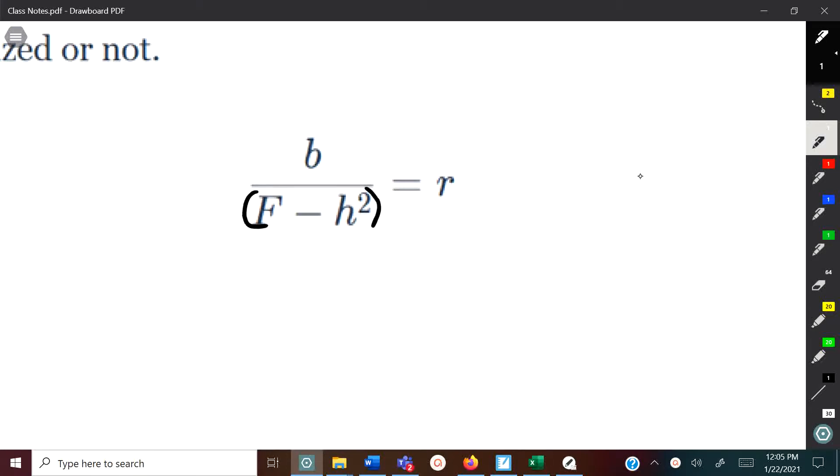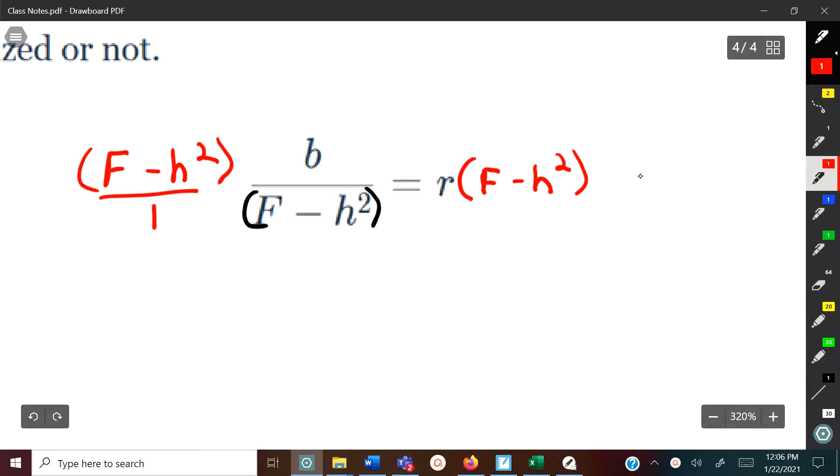The opposite of division is multiplication, so we're going to multiply by f minus h squared. Since it's a fraction, you can put it over one so you can multiply that way. On the right side we have r times f minus h squared. This cancels out leaving b over one, so b equals r times f minus h squared.